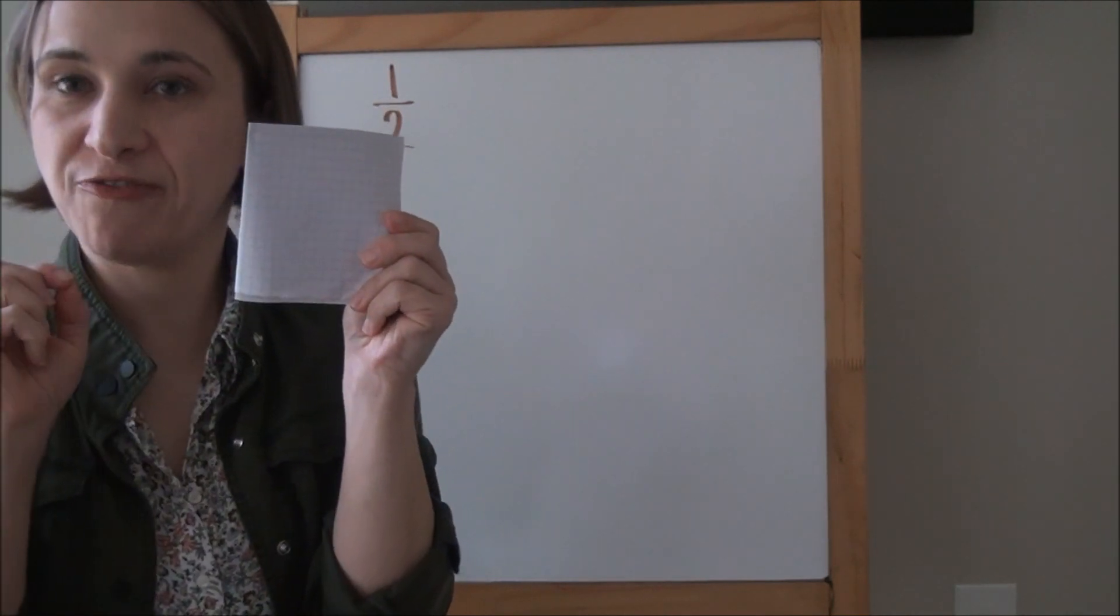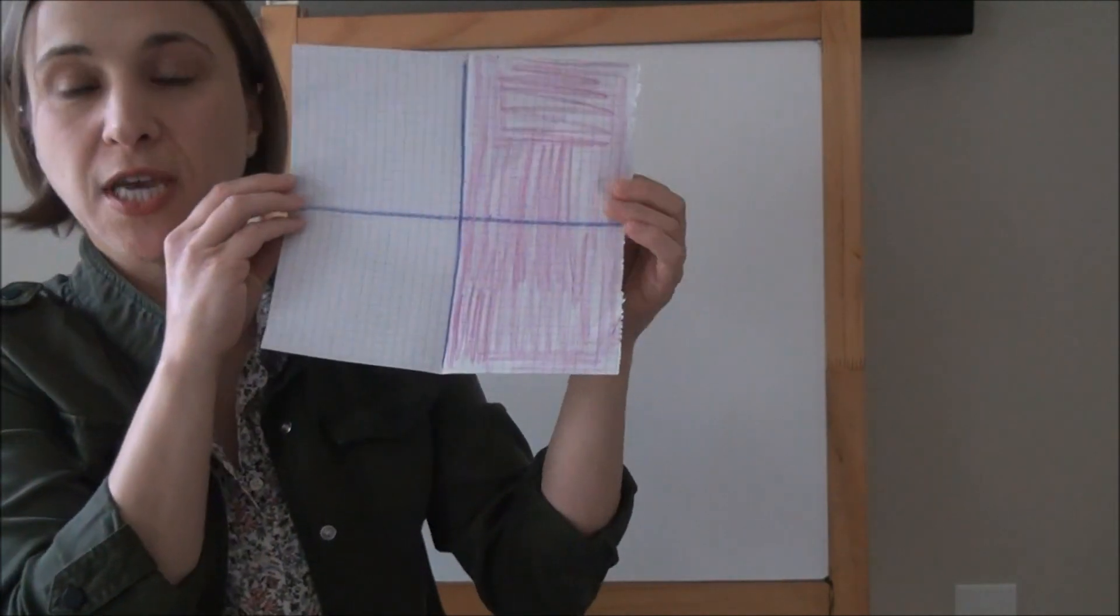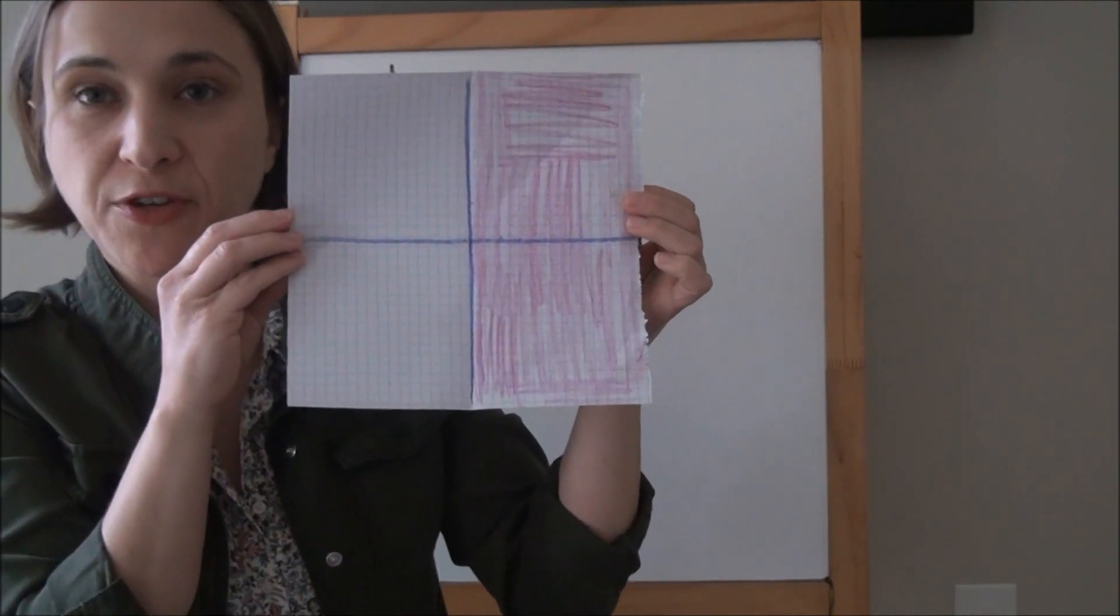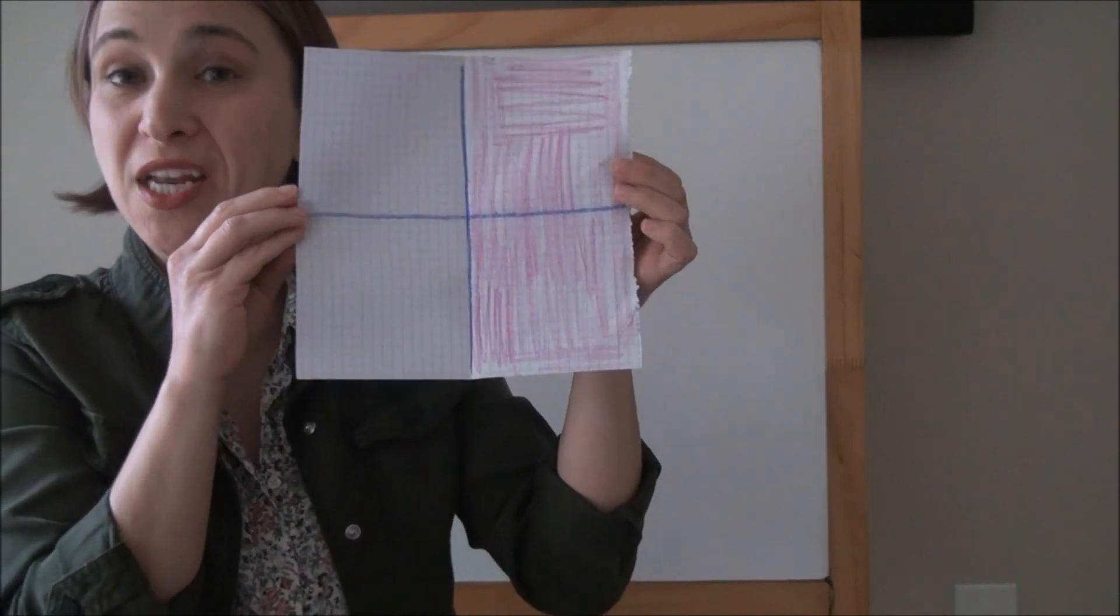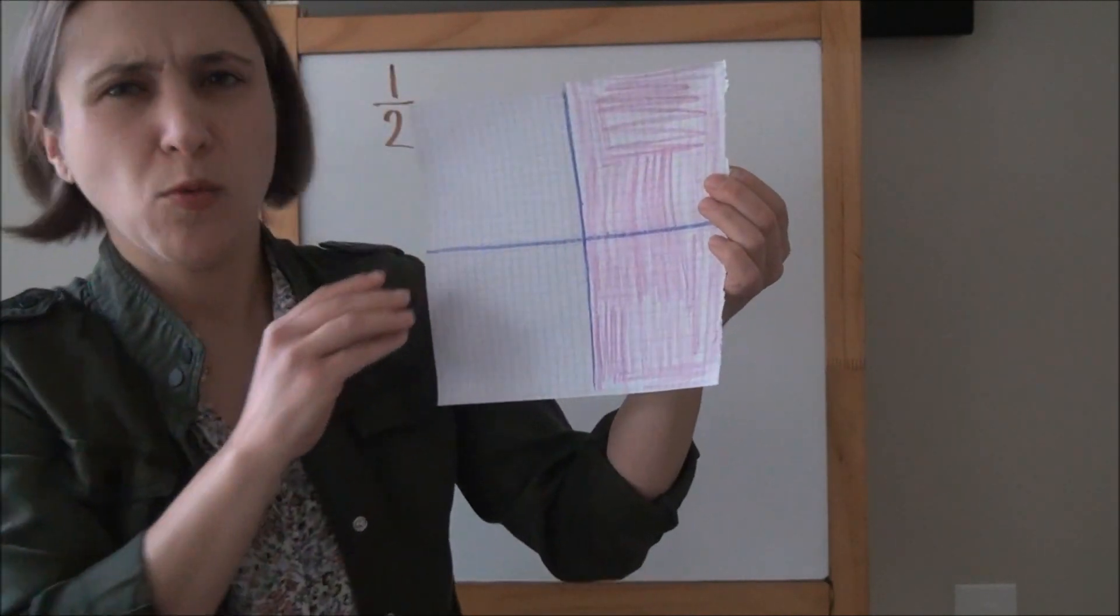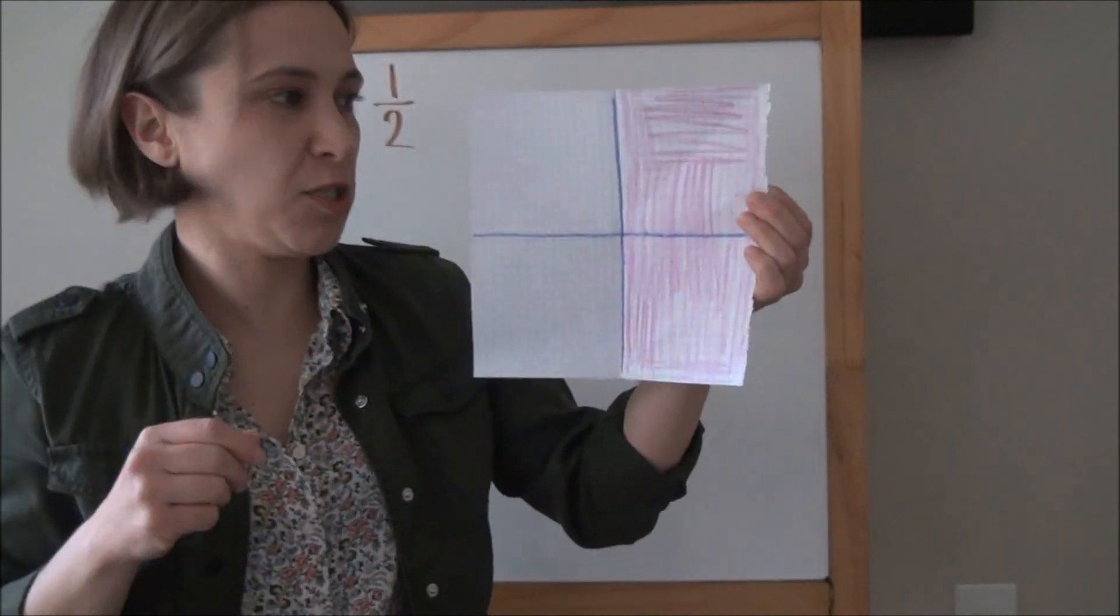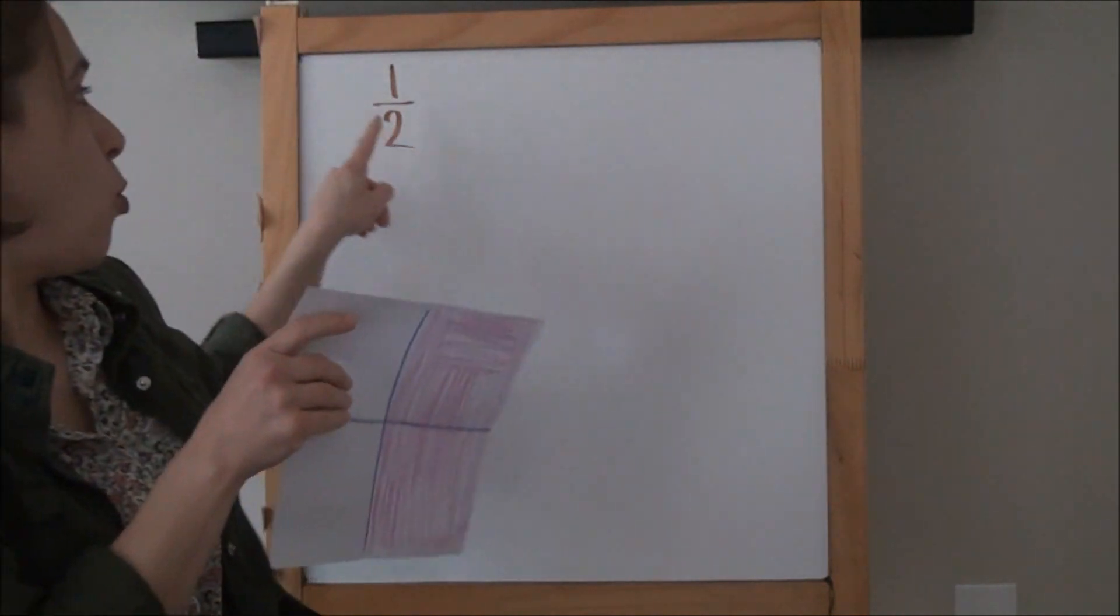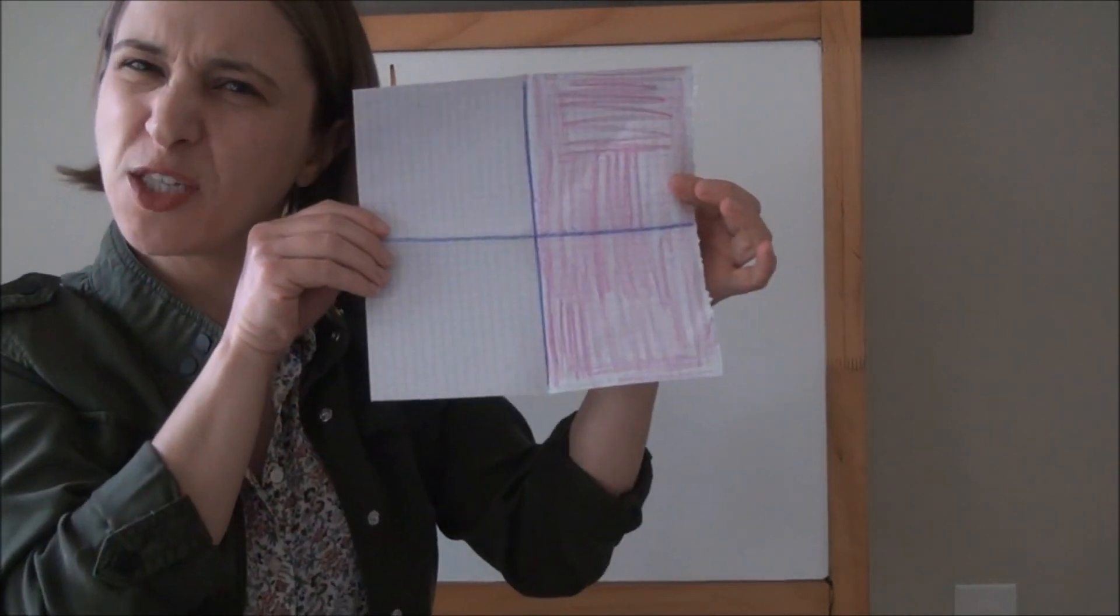Now fold it in half once again, making a smaller square. Get those edges nice and crisp. And when you're ready, open it up. If you need to, trace your folds so they're easier to see. Now it looks like we've done our extra fold. I traced my fold so it's easy for you to see. I want you to tell me what fraction of this paper is shaded now.